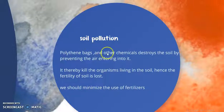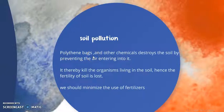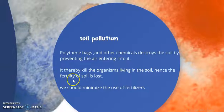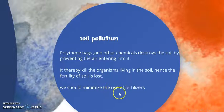Soil can be polluted by various chemicals like detergents, soaps, or from factories — different types of hot water. These can change the nature of the soil. Also, when we use polythene bags and throw them, the plastics remain on the soil, preventing air from entering. When air doesn't enter the soil, it kills the microorganisms living in the soil, which changes the fertility of the soil. So we should minimize the use of fertilizers, chemicals, and polythene bags.